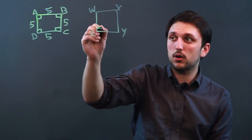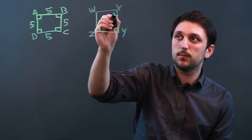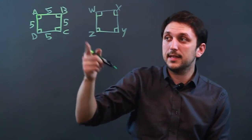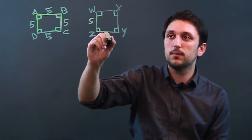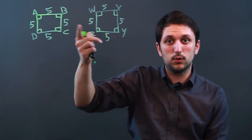well, because it's a square, all the angles are going to be 90, and if all the sides are five, then these two squares are congruent.